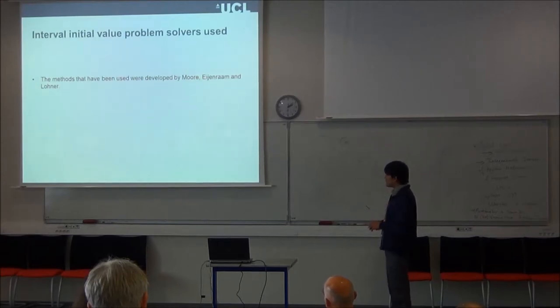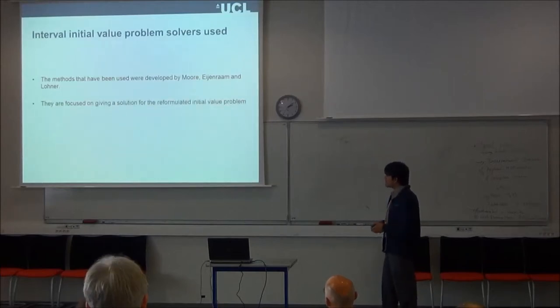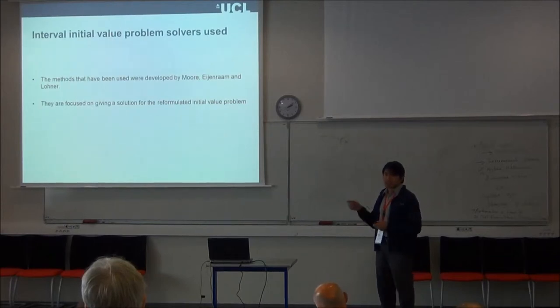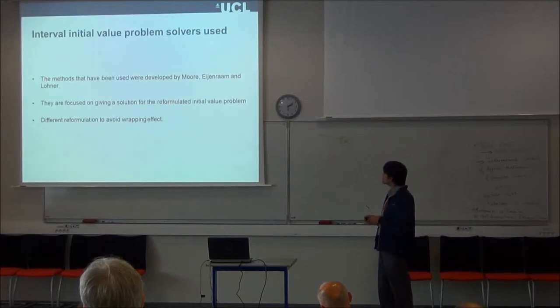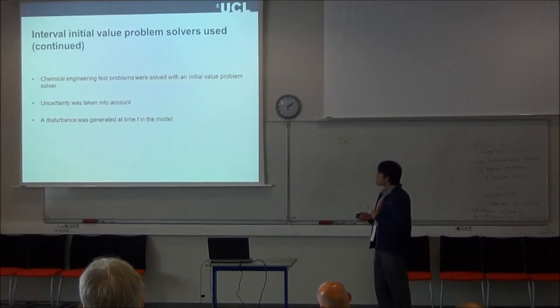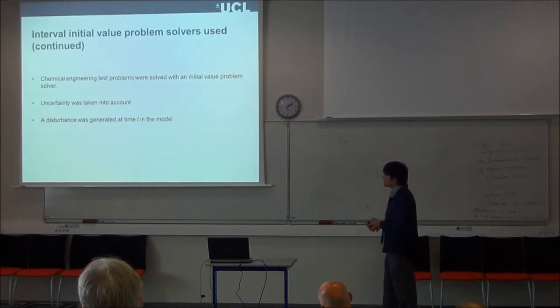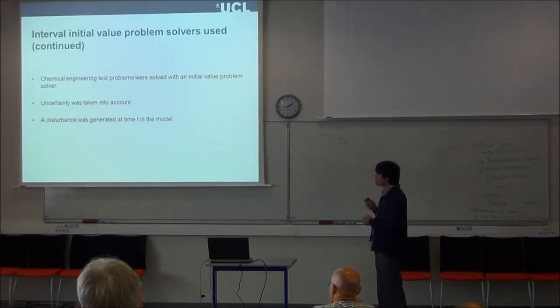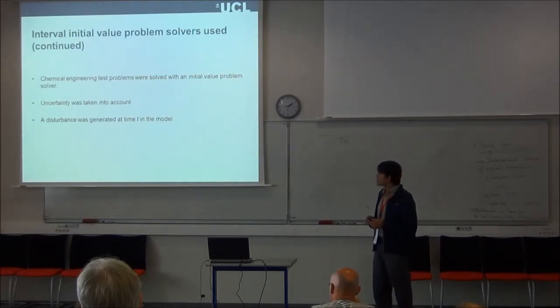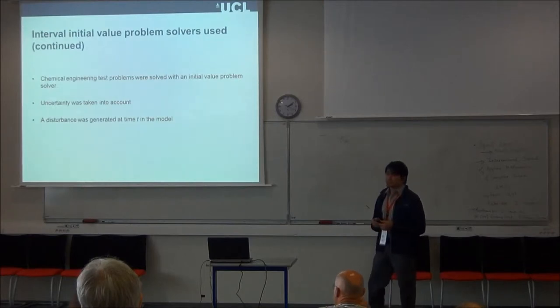So the methods that we have been using were developed some time ago by Moore, Lohner, and Nedialkov, and they are focused on giving a solution to the problem I have presented just before in the mathematical description. So they offer different formulations in order to compute some operations that avoid this wrapping effect. So what I have done is to try chemical engineering problems and to solve them with one of these initial value problem solvers. I have taken some uncertainty into account, and for some of the problems I have generated a disturbance to see if we can bound successfully these behaviors.